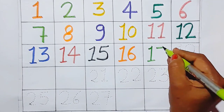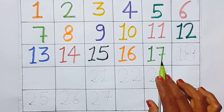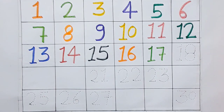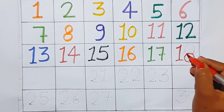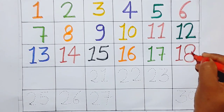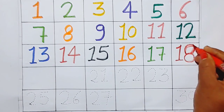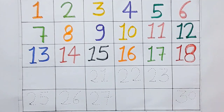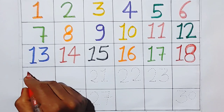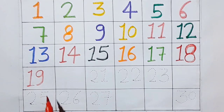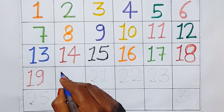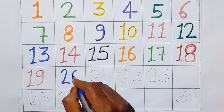Seventeen — this is seventeen. Eighteen. Nineteen — this is nineteen. Twenty.